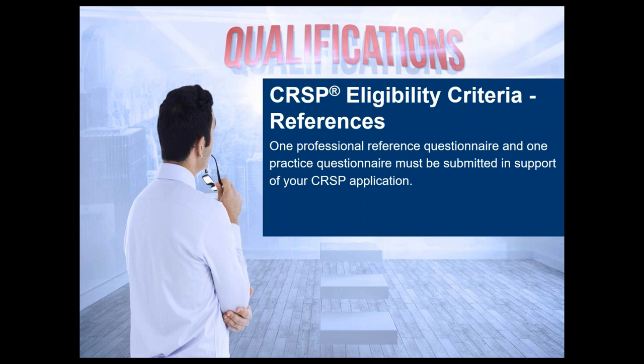The two questionnaires may not be completed by the same person. Please note that the BCRSP may contact your reference directly for more information or clarification. One of those two references must be completed by a CRSP or equivalent. Examples of equivalents include CMIOSH, CSP, professional engineer, CIH, certified human resource professional, or another professional who holds a provincial license to practice as a professional, similar to an engineering license.